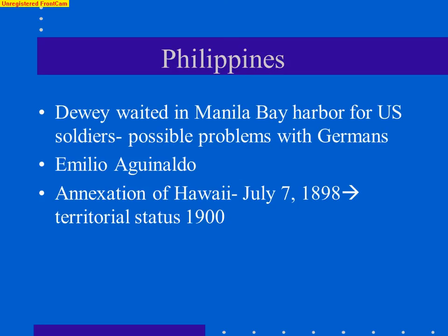Dewey had to wait in Manila Bay for American soldiers. They had defeated the Spanish navy but didn't have ground forces for a land assault. There was concern that European countries arriving to evacuate their citizens might cause trouble, and a fear that Germany might try to seize the Philippines — luckily, that didn't happen. American soldiers began arriving in August of 1898 and started coordinating with Filipino insurgents led by Emilio Aguinaldo, who was excited to have American help winning their independence. Too bad for Aguinaldo that the United States was going to control the Philippines after the war.